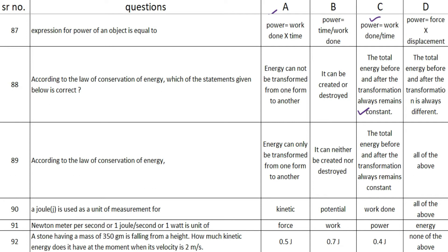According to the law of conservation of energy: all energy can only be transformed from one form to another, it can neither be created nor destroyed, and the total energy before and after the transformation always remains constant — so option D, all of the above, is the right option.